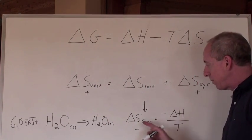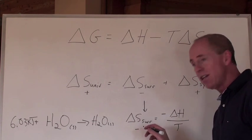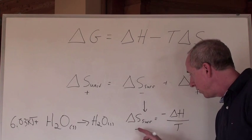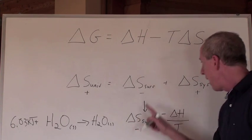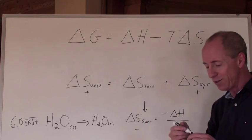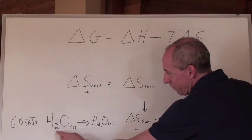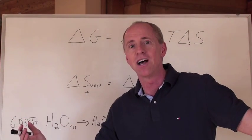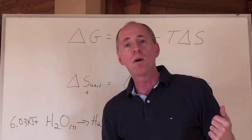The magnitude of that number, how big that negative value is, depends on the temperature. If the temperature is really high, this number is very small. This small number added to this large number will still give you a positive value. If the temperature is very high for this reaction, water-solid turning into water-liquid, like greater than 0 degrees Celsius, that reaction is going to be spontaneous.